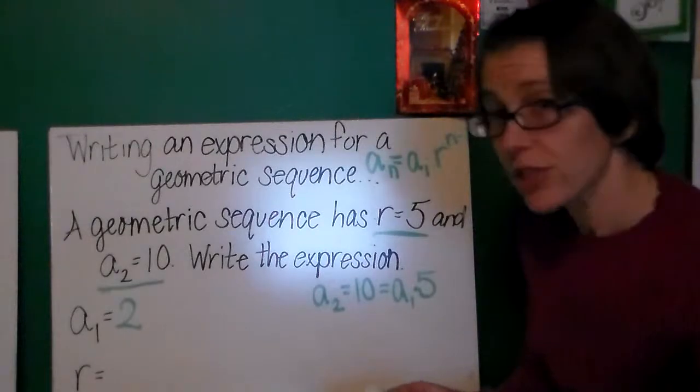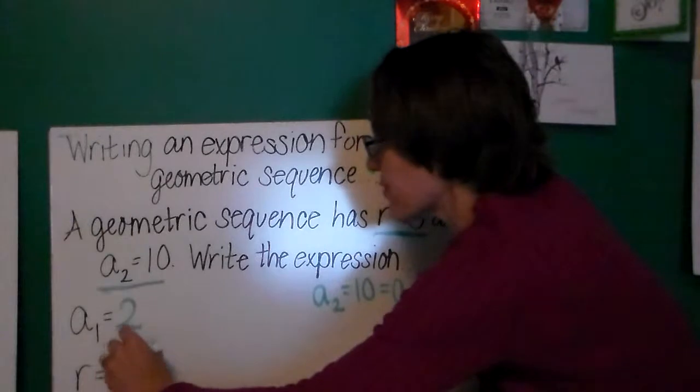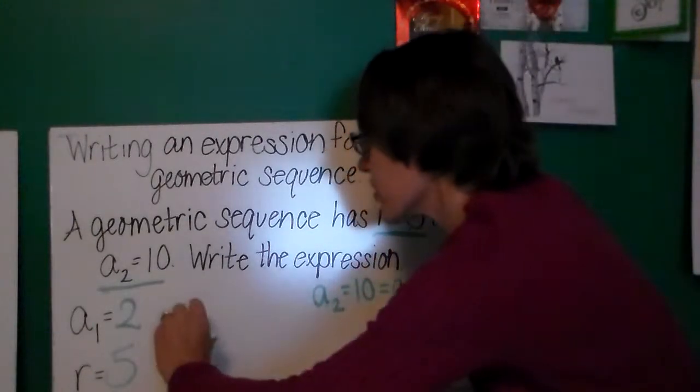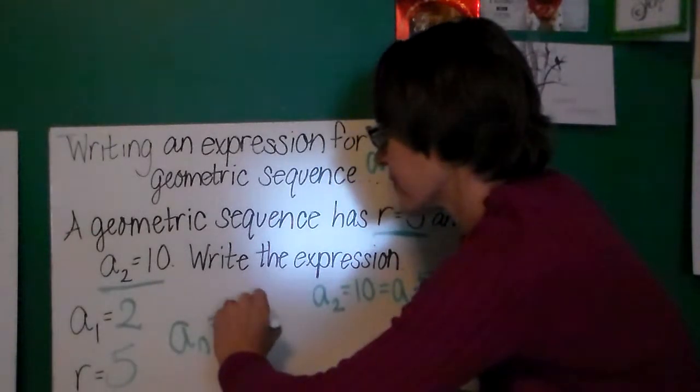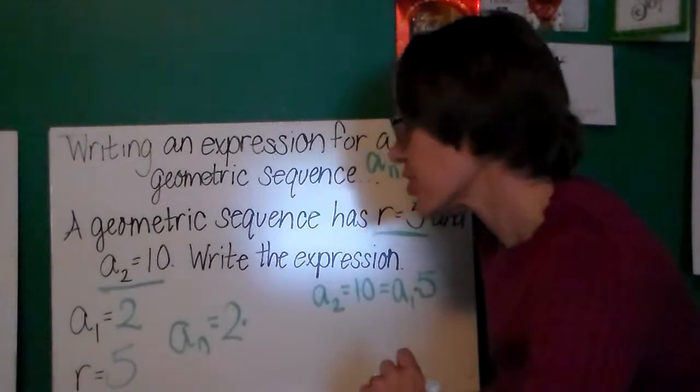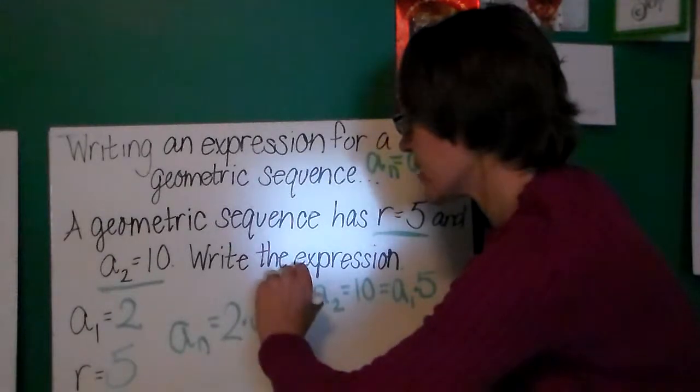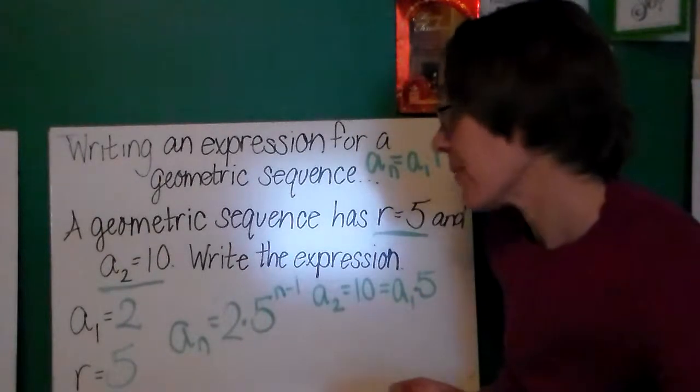Our common ratio, fortunately, has been given to us. That common ratio is 5. That means that to find any term a_n, we're going to start by multiplying the first term by the common ratio raised to the n minus 1 power.